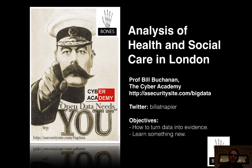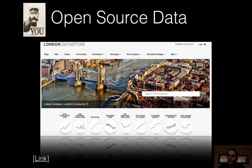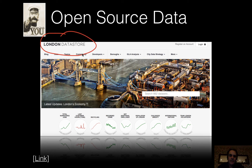Let's have a look at an analysis of health and social care in London. We're going to be using an open source data source to analyse the different demographics of health and social care around London. London has one of the best open source data sources, probably in the world, and this site contains a great deal of open source data sets that can be used fairly easily and then cross-correlated.